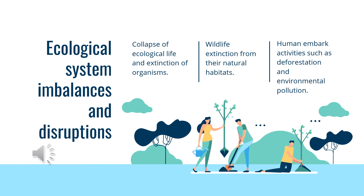Ecological system imbalance and disruption result from technological advancement in the modern world. Collapse of ecological life and extinction of organisms from their natural habitats is a direct probable result of technology. Wildlife extinction from natural habitats — driven by creating more space for farming activities and homes for the increasing population — is evidence of how technology causes ecological imbalance. The availability of improved technology causes people to devise convenient ways of satisfying their basic needs and increase productivity requirements. Humans embark on activities such as deforestation, extensive farming, and environmental pollution, which lead to changes in the natural life cycle that maintains the ecosystem. Continued environmental degradation through destructive human activities affected by technology will eventually lead to collapse.